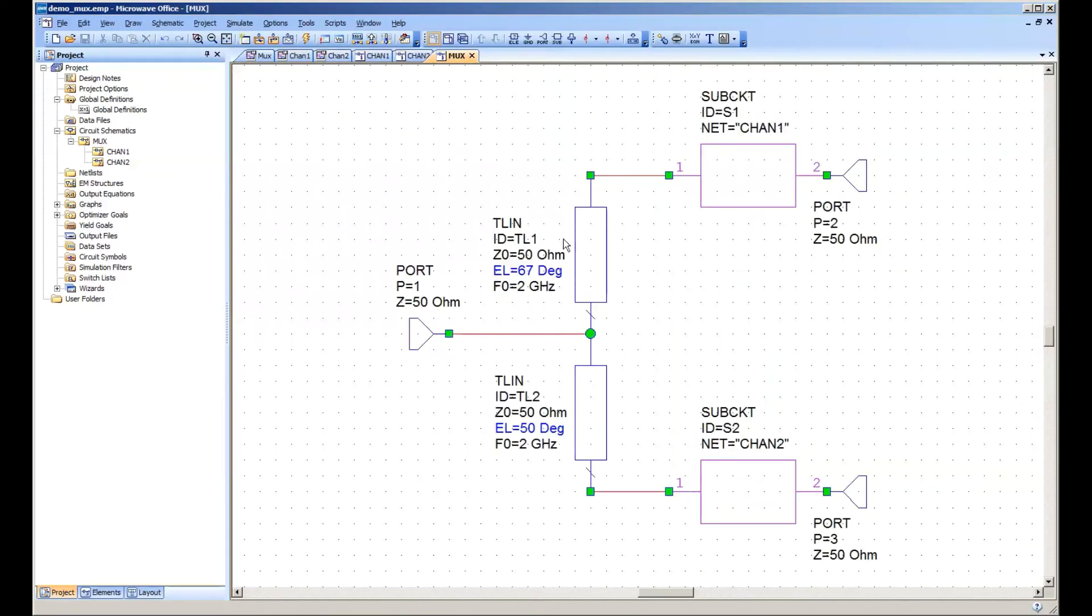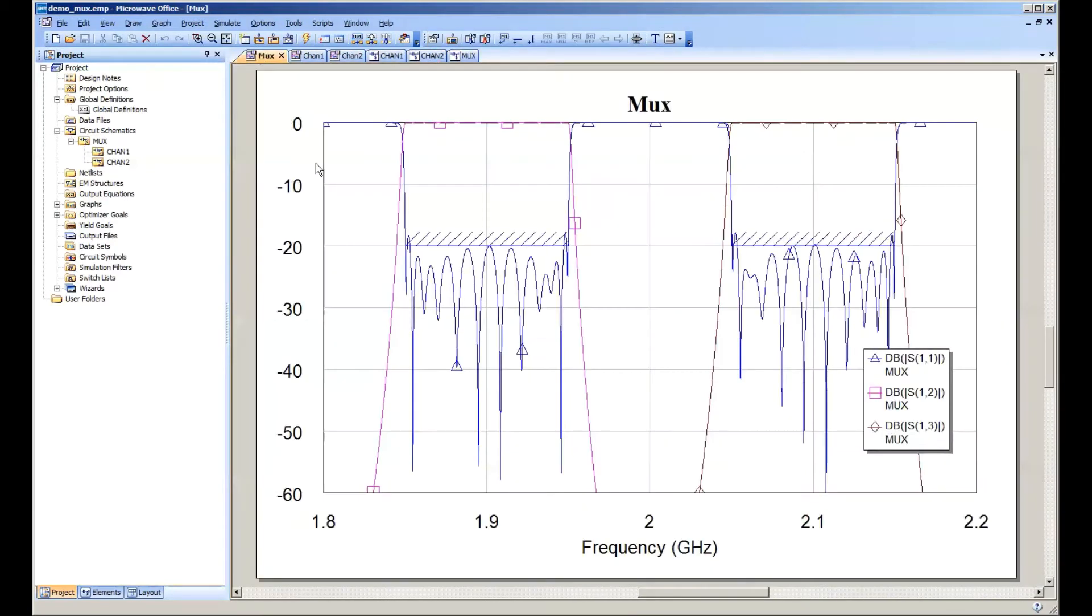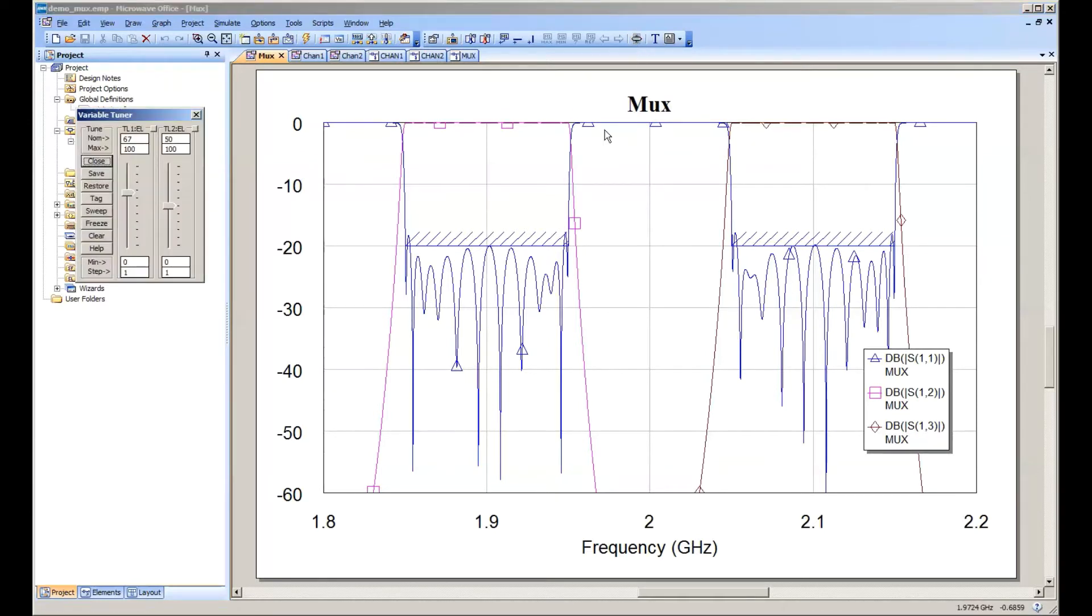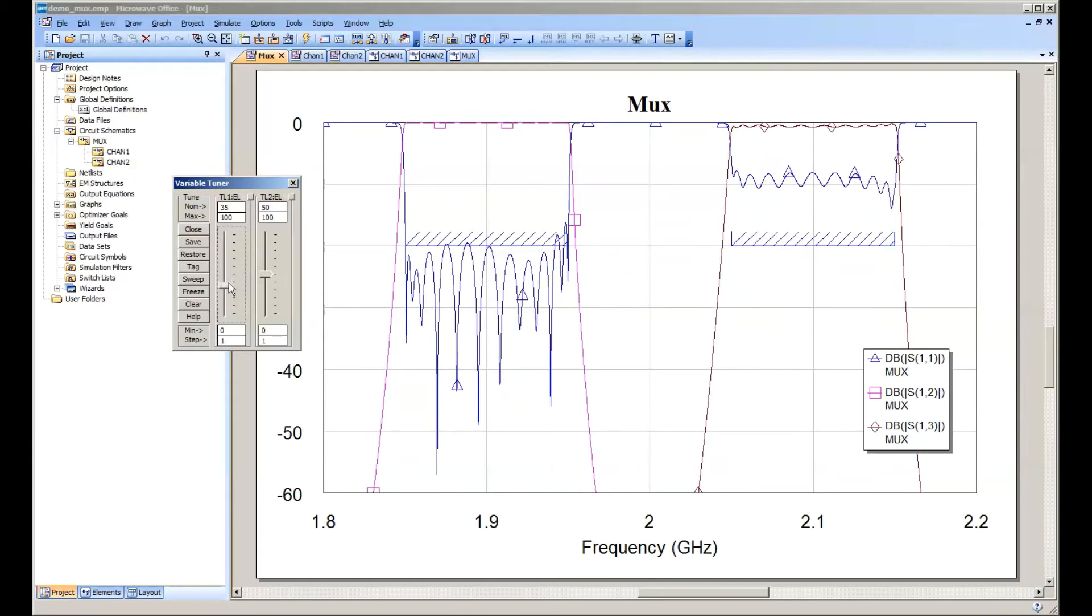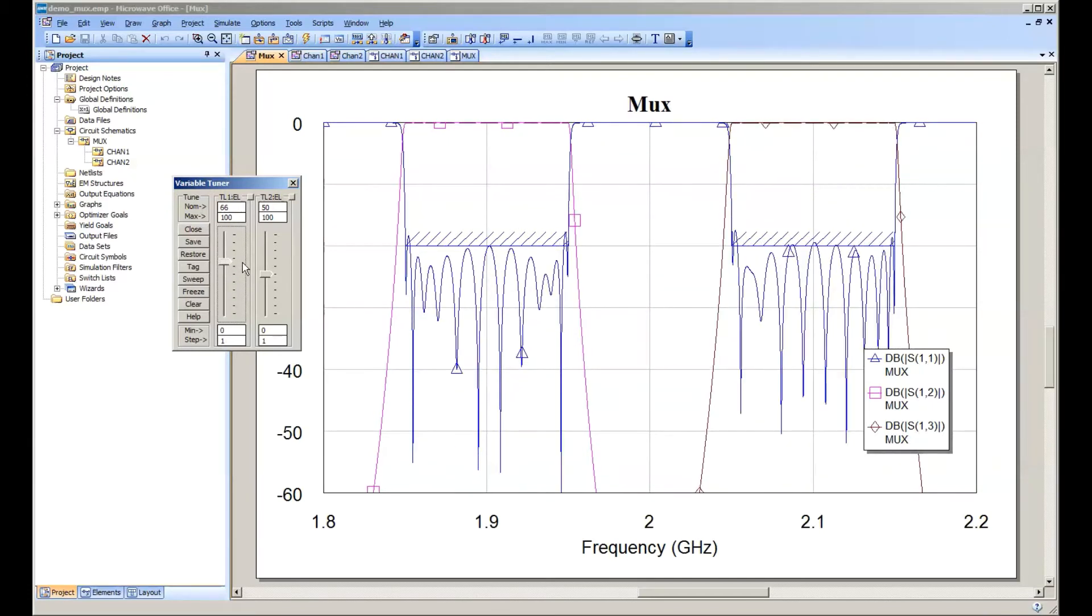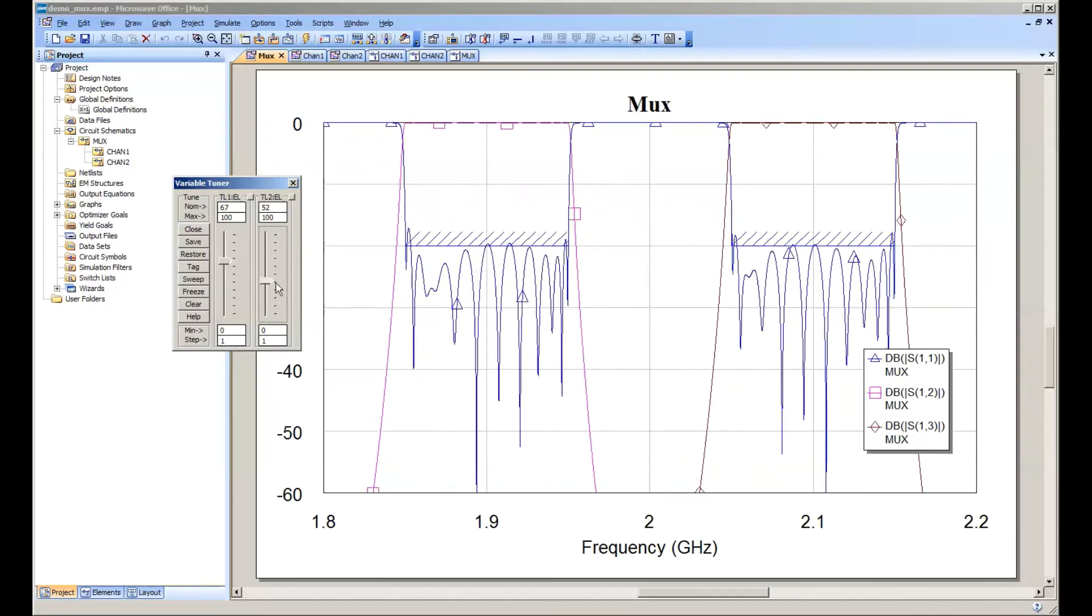And then here's the channel 2 filter and its doubly terminated response. So we hook those two together. And if we look at the existing top level response, I've already adjusted my line lengths to be pretty close to optimum. There actually isn't an exact answer or an exact solution here. But if we tune on those line lengths, we can see how the two channels interact with each other.